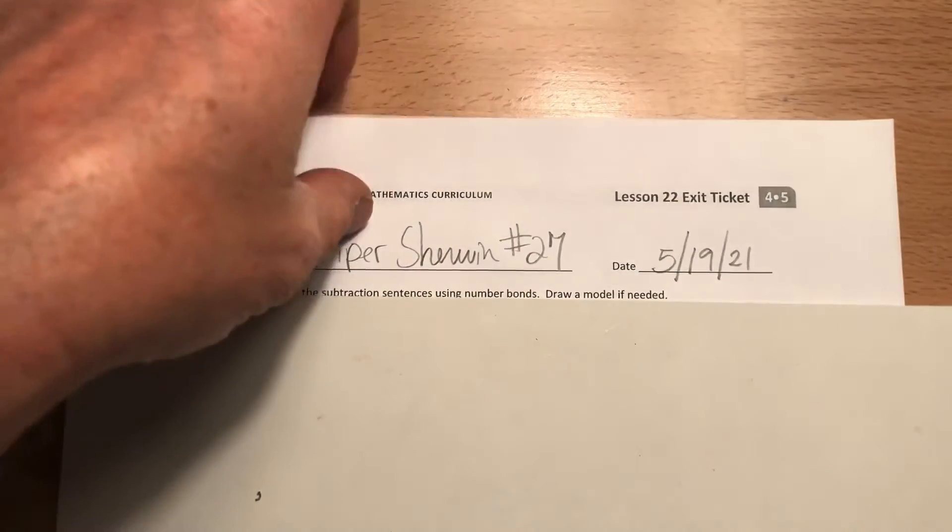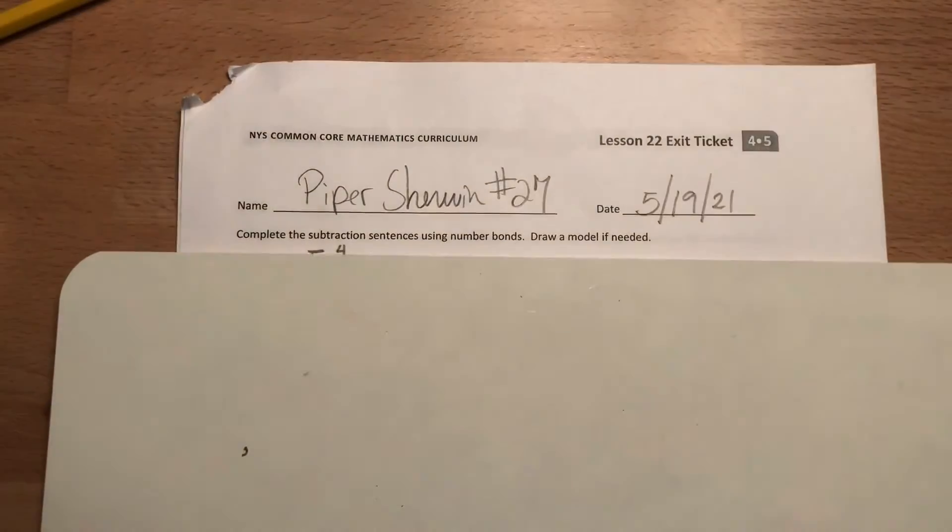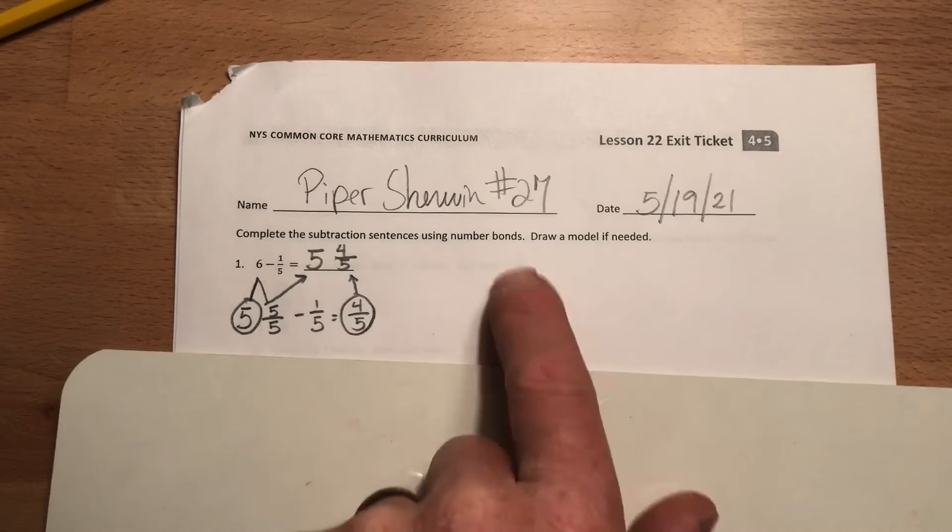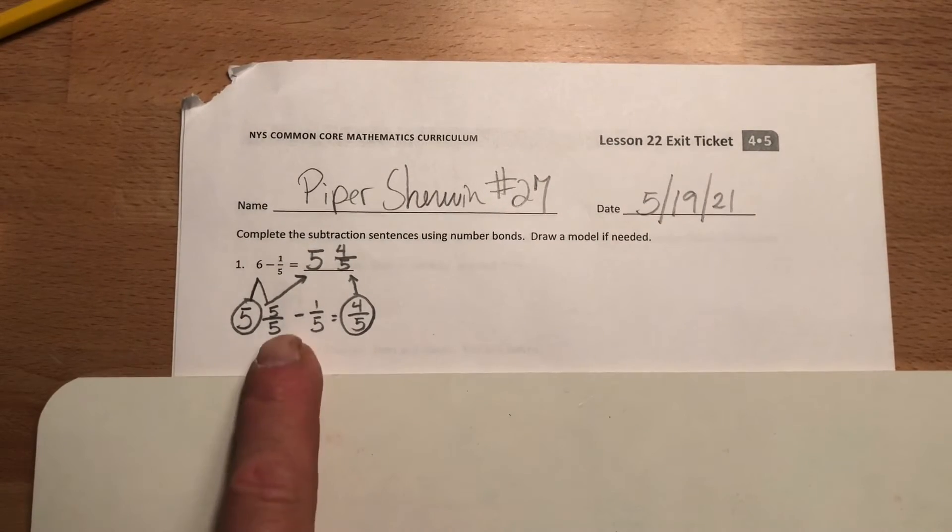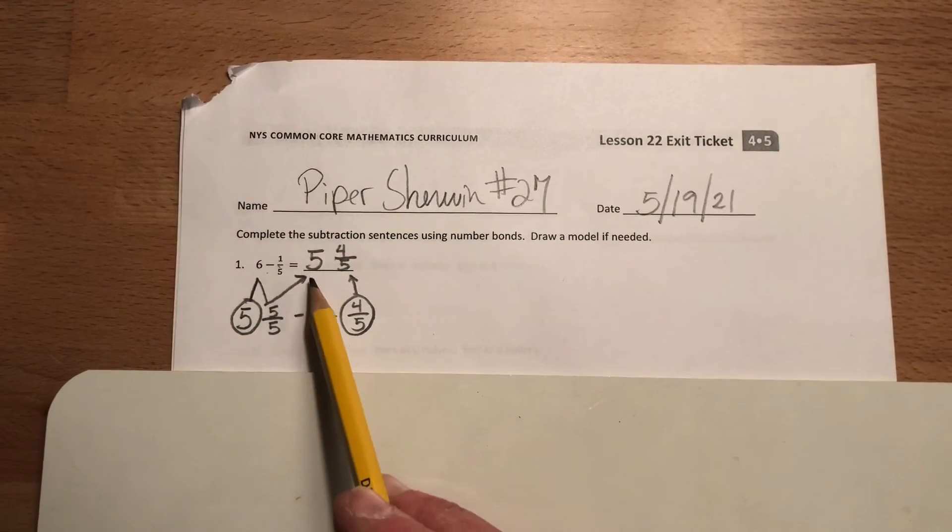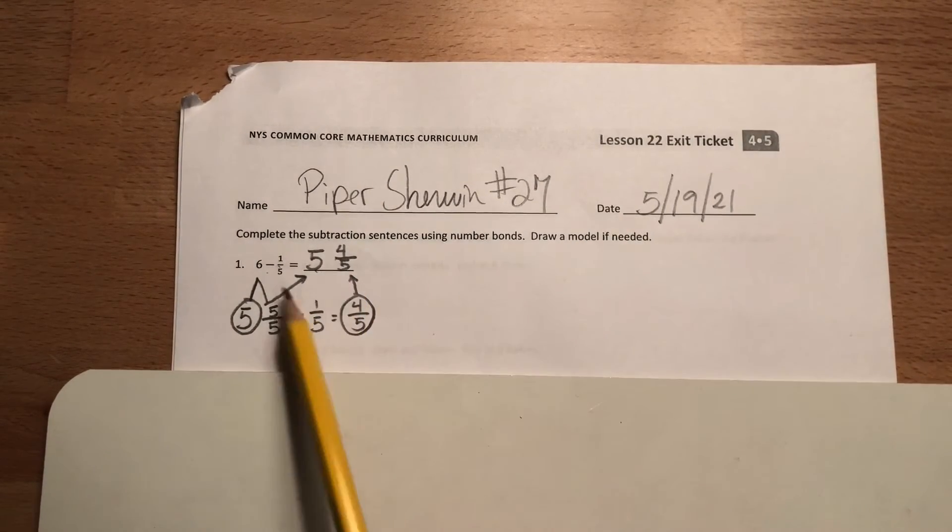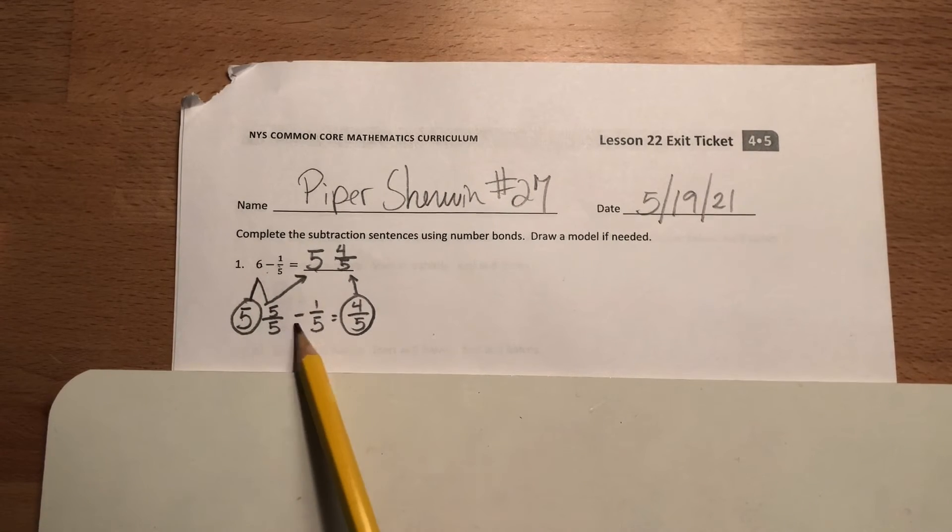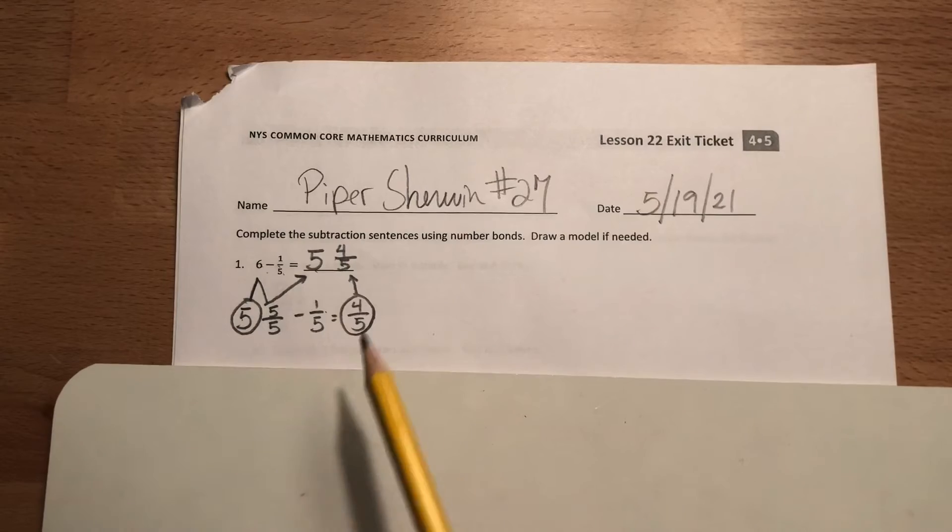Here we are. We complete the subtraction sentences using number bonds, or draw a model if needed. Here we did this: 6 minus 1/5 is going to give you 5 and 4/5. I made my 6 into a number bond of 5 and 5/5, minus that 1/5 you get 4/5, and then it's 5 and 4/5.